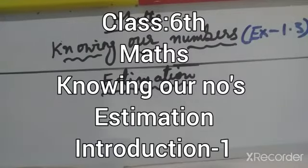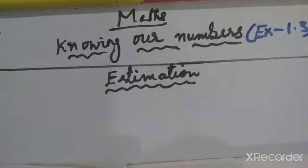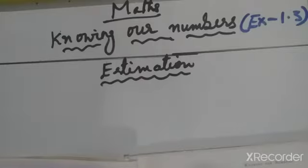Hello children, this is 6th standard Maths, chapter name is 'Knowing Our Numbers', Exercise 1.3. Our next topic is estimation. Estimation means we are guessing the numbers approximately — for example, if there is any celebration at your home or at school, we estimate that a thousand people will come.